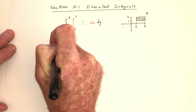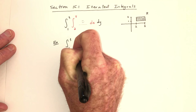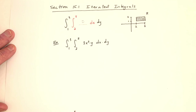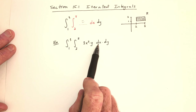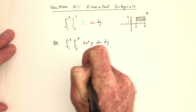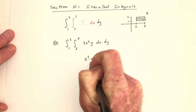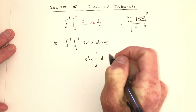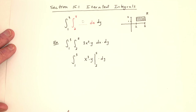Now let's do a specific example. Integrate from one to three, integrate from two to five, and the function will be three x squared times y dx dy. This means that y is going to be held constant because we're integrating with respect to x first. So do the antiderivative: that would be x cubed over three, and the three and over three cancel, so the antiderivative is x cubed. Y is just being held constant, so it stays there for now, and we evaluate with x going from two to five. The dy just has to wait its turn.